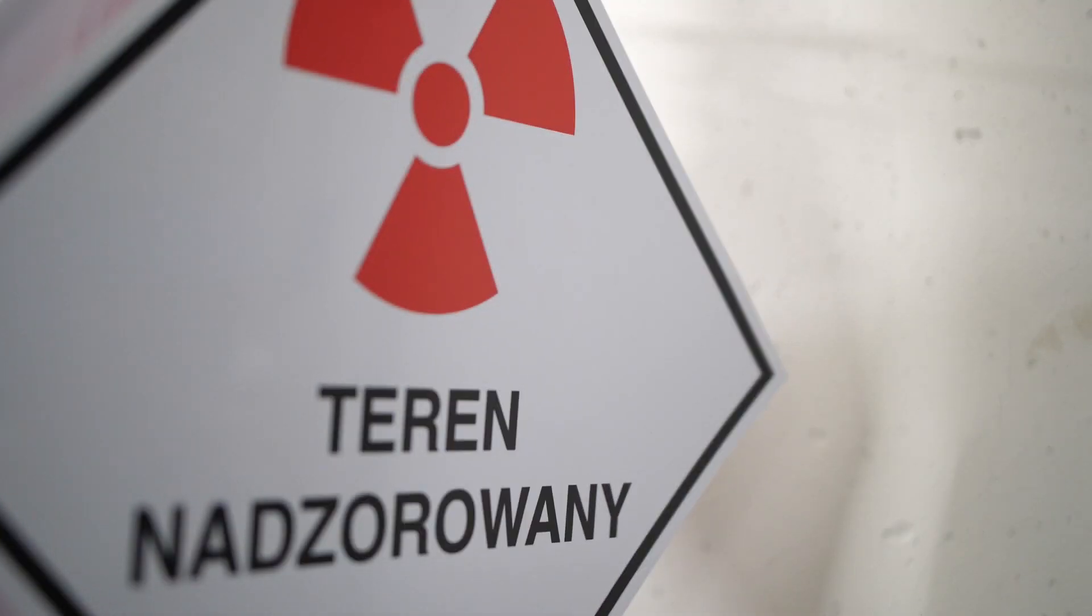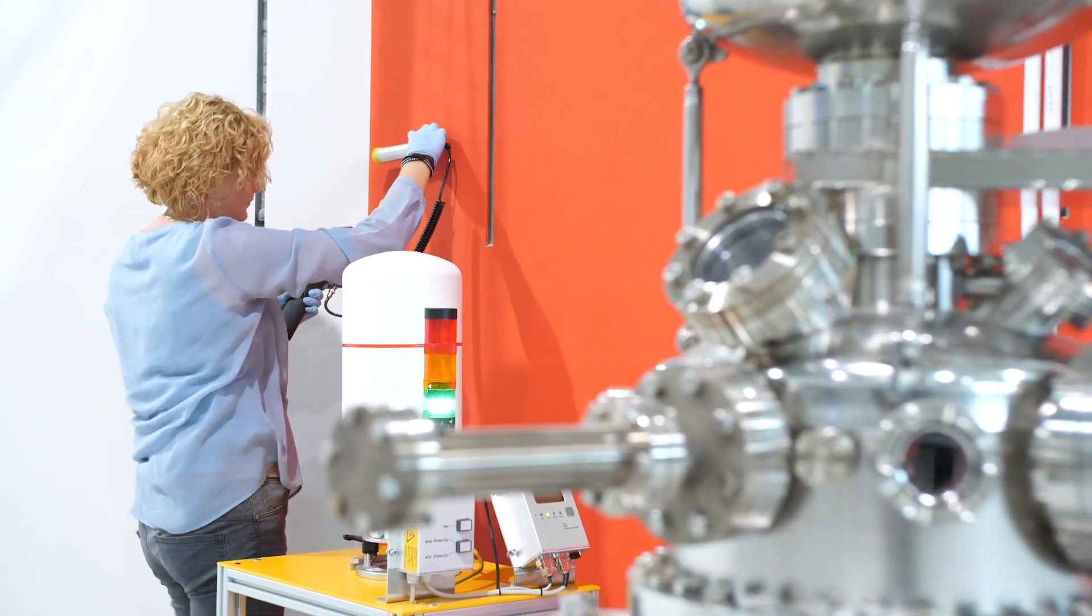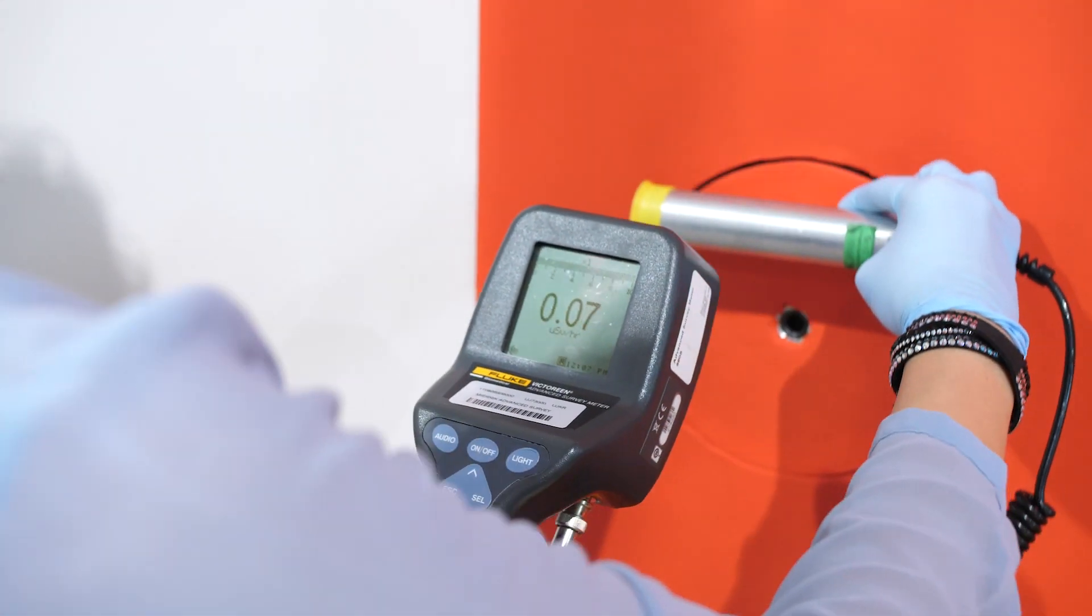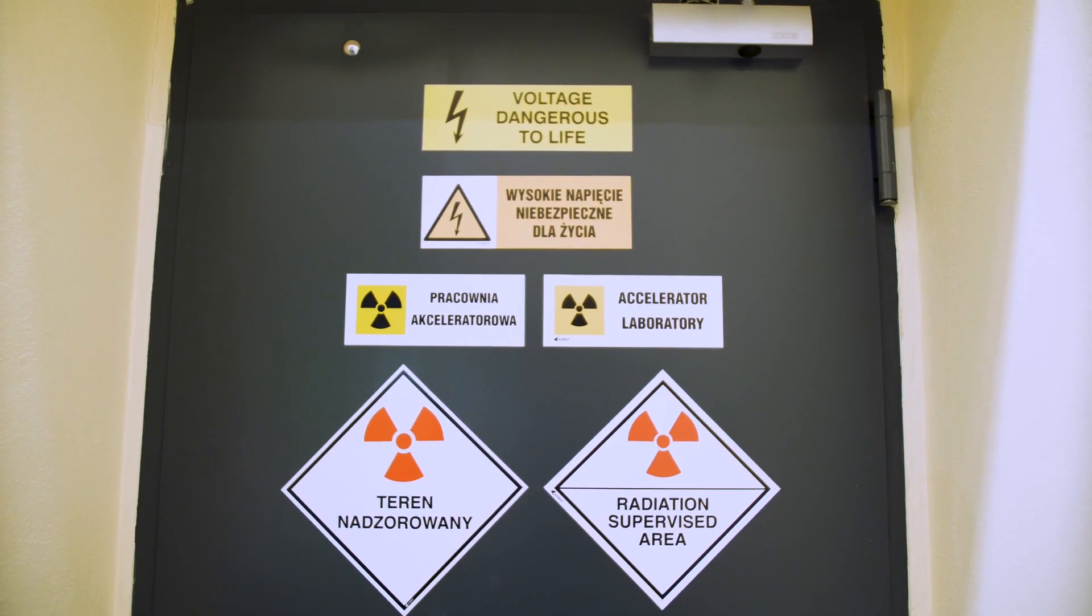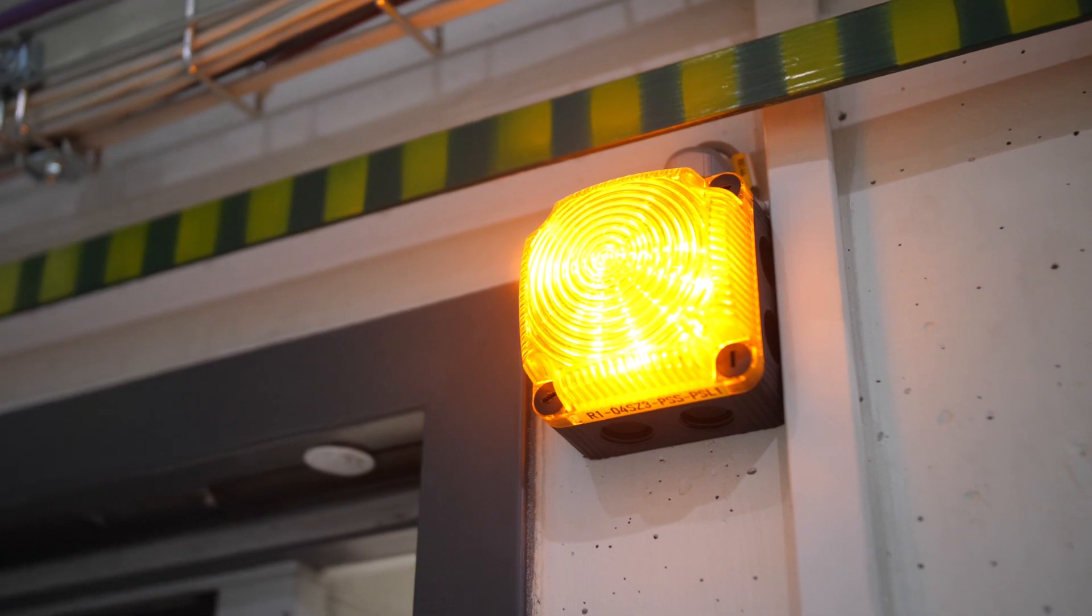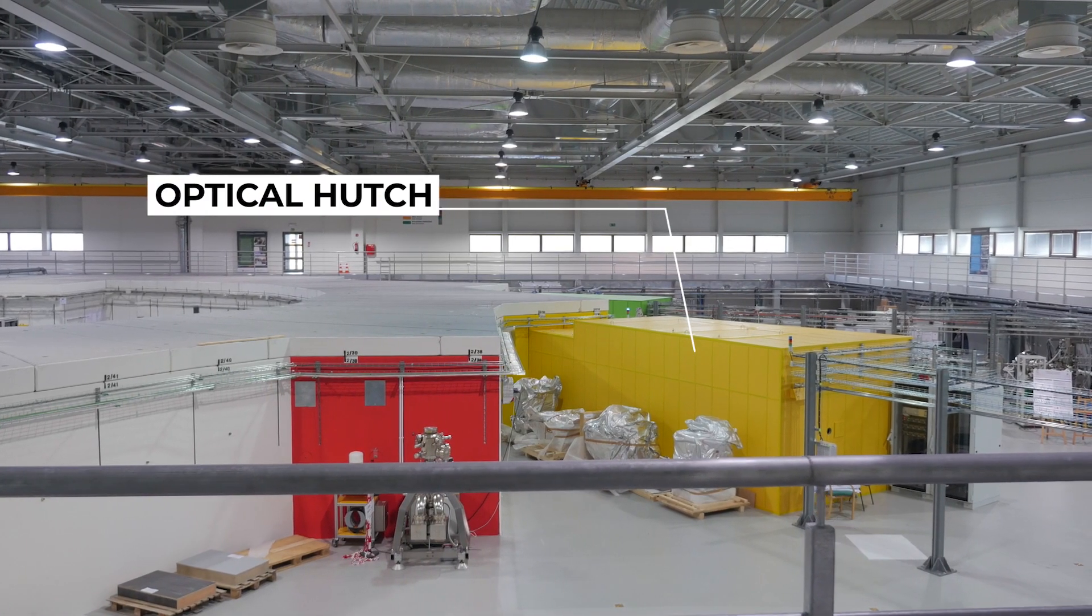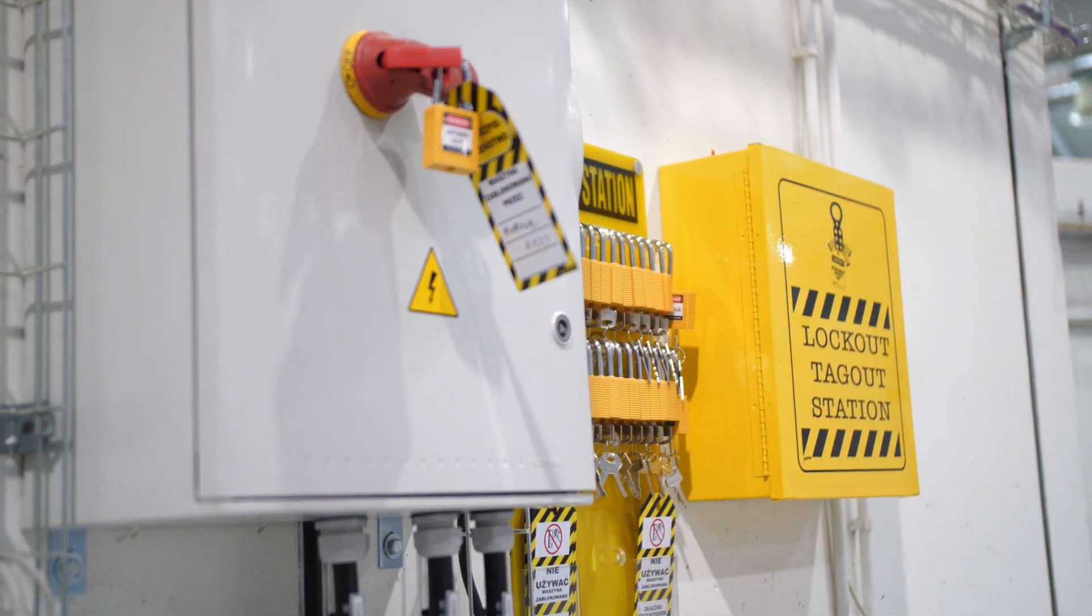The synchrotron operations are supervised by the Radiation Protection Officer. The synchrotron is utterly safe to the environment, even though while working it creates harmful electromagnetic radiation. Safety is ensured by special radiological barriers, following strict access protocols to all dangerous areas, and constant monitoring of the radiation levels.